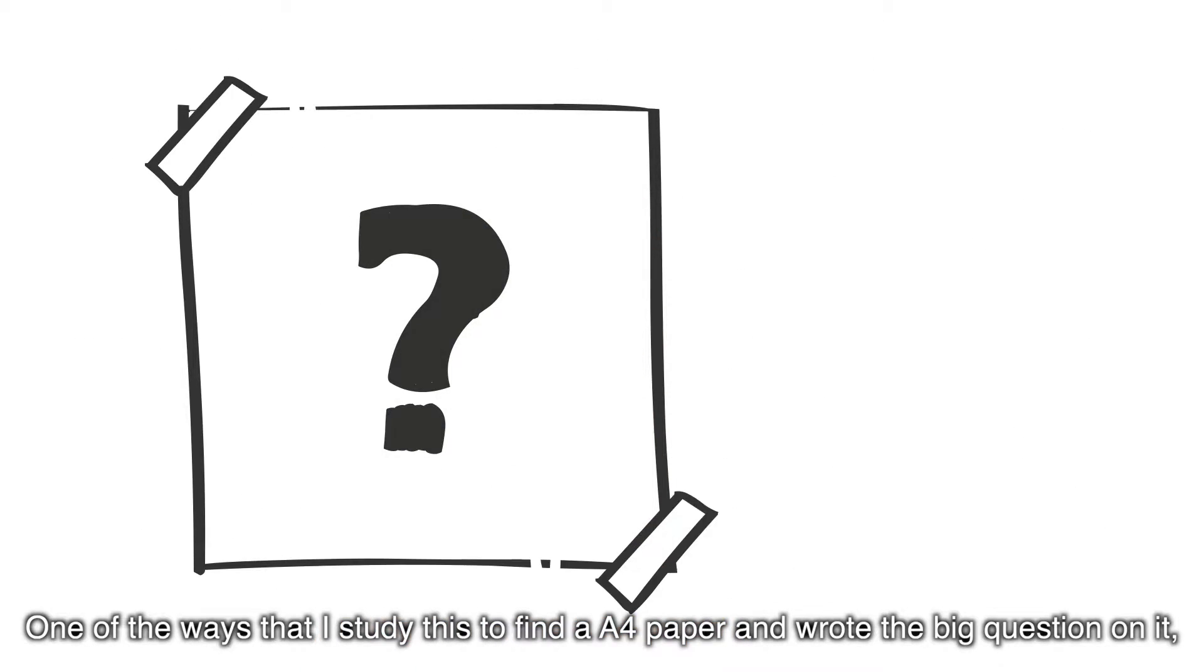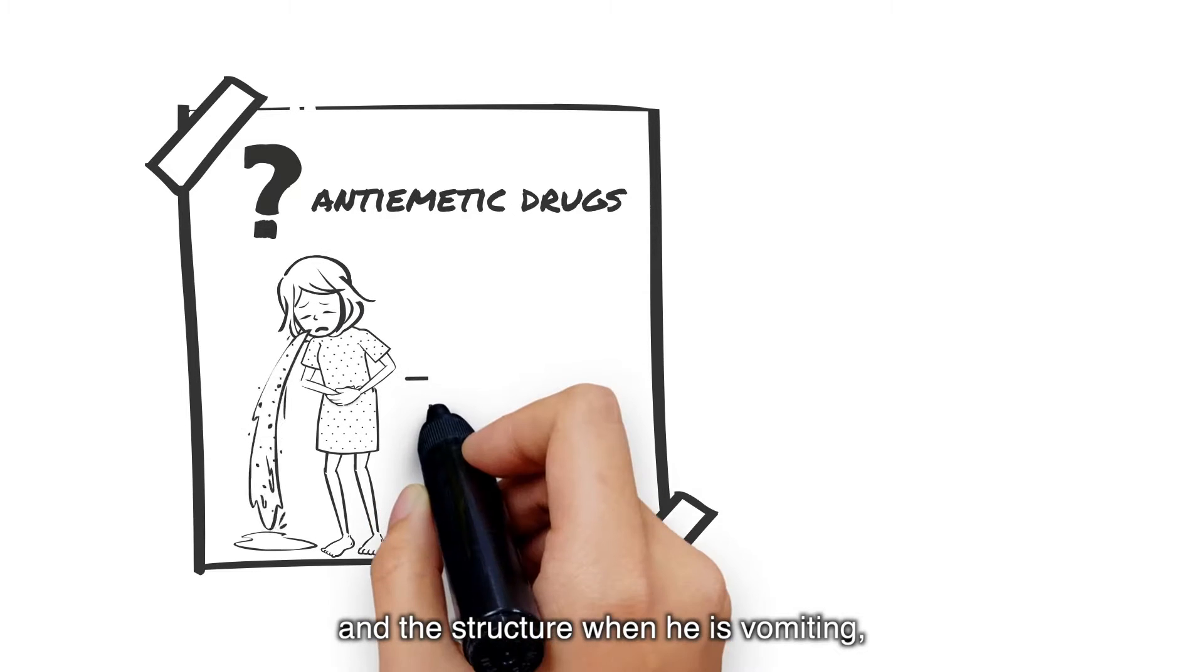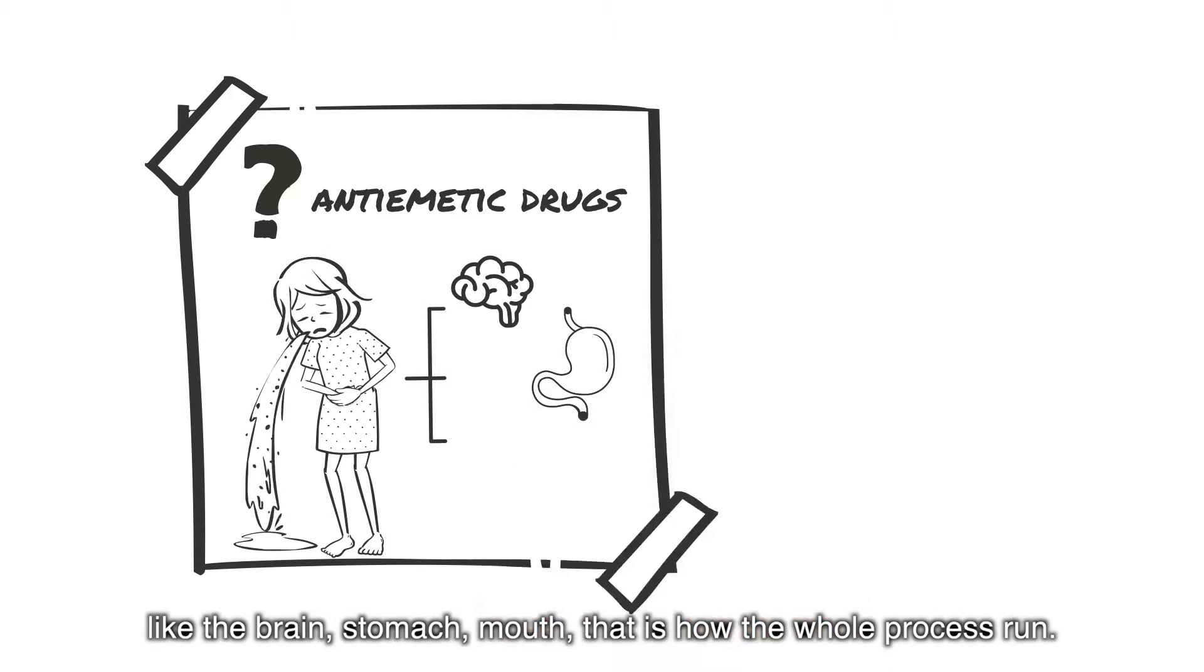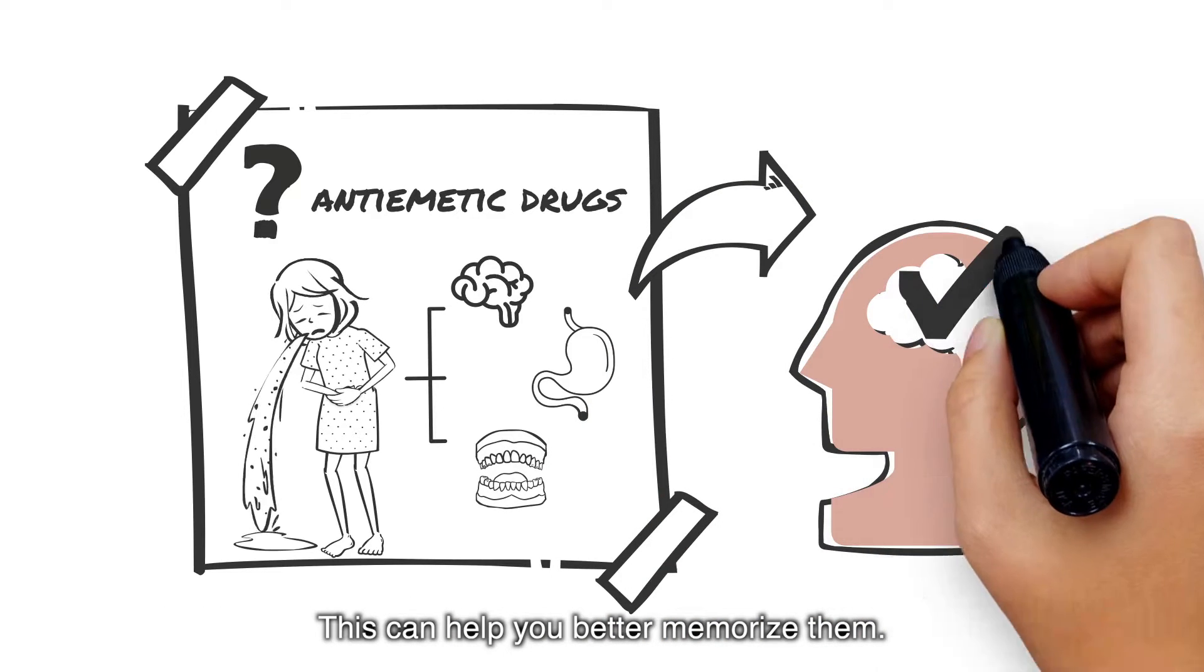One of the ways that I study this is to find a large paper and write the big question on it, like anti-emetic drugs. Then draw a picture depicting a vomiting person and the structure when he is vomiting, like the brain, stomach, mouth. That is how the whole process runs. This can help you better memorize them.